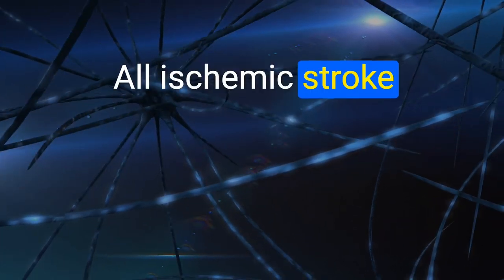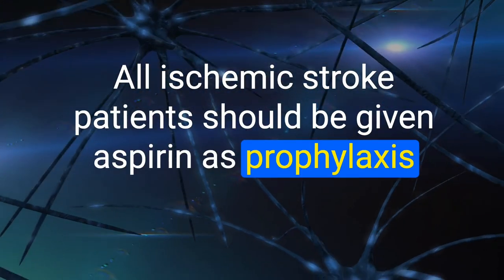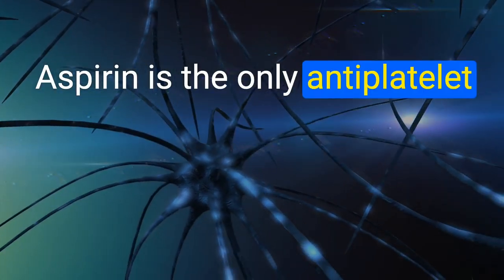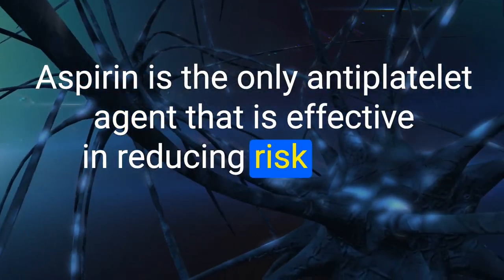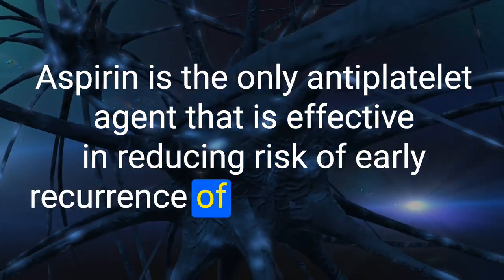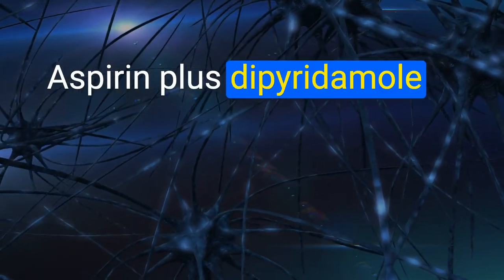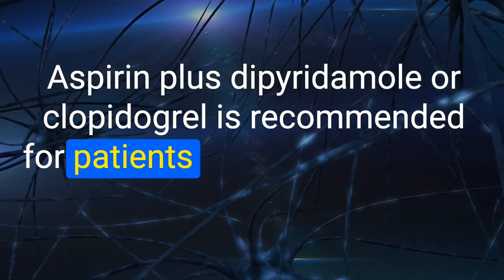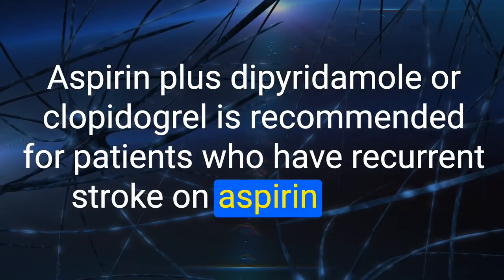25. All ischemic stroke patients should be given aspirin as prophylaxis for secondary stroke. Aspirin is the only antiplatelet agent effective in reducing risk of early recurrence of ischemic stroke. Aspirin plus dipyridamole or clopidogrel is recommended for patients who have recurrent stroke on aspirin therapy.